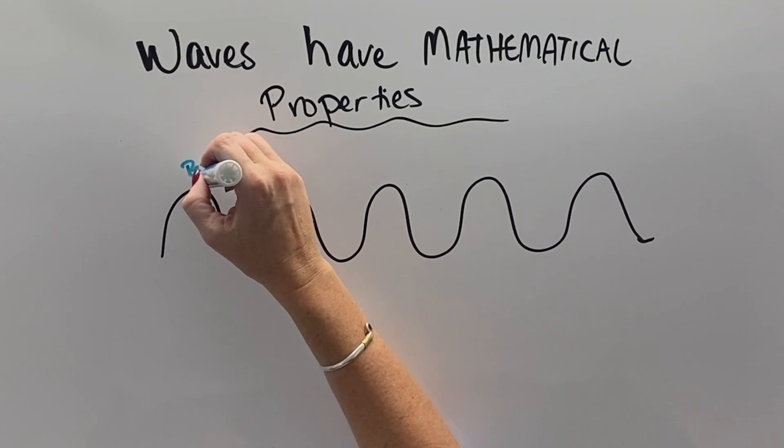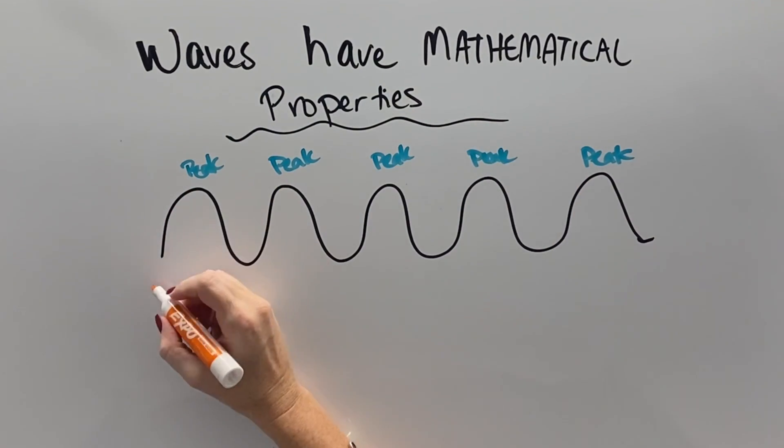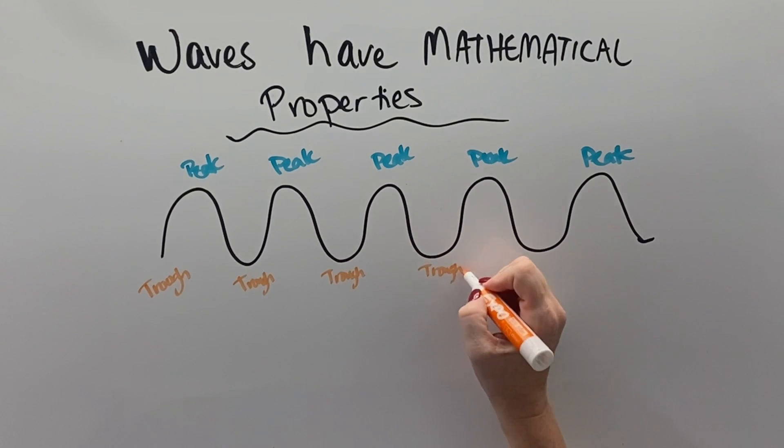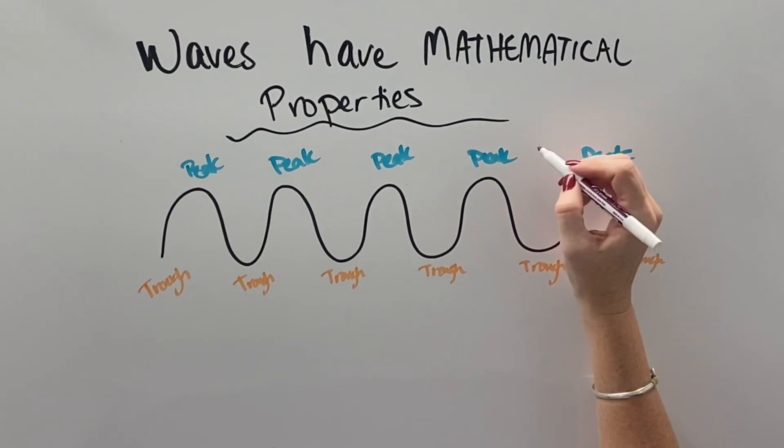Another thing we need to look at with waves are a few more definitions. The top of the wave is called the peak and the bottom of the wave is called the trough. And sometimes the peak is called the crest, they're just synonyms.